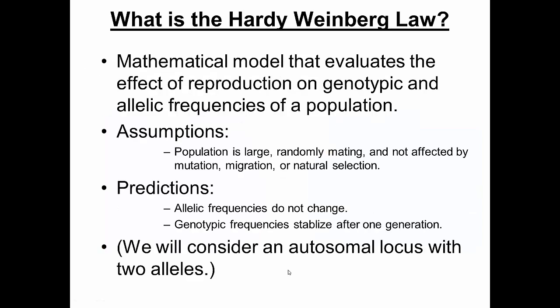Now that we've covered how to calculate actual genotypic and allelic frequencies, let's go into Hardy-Weinberg law. Hardy-Weinberg is a mathematical model that evaluates the effect of reproduction on genotype and allelic frequencies in a population. There are some assumptions: first, the population is infinitely large; second, mating happens randomly; third, the population is not affected by mutation, migration, or natural selection.